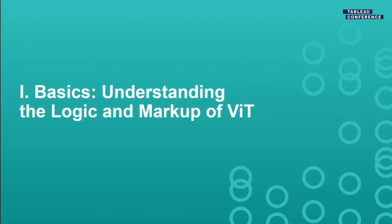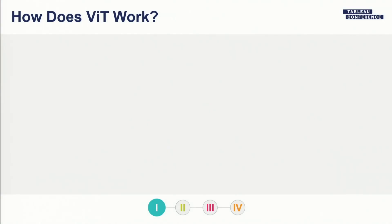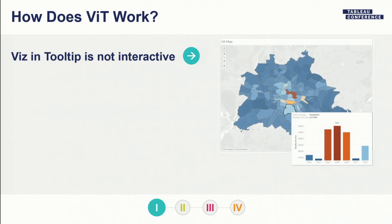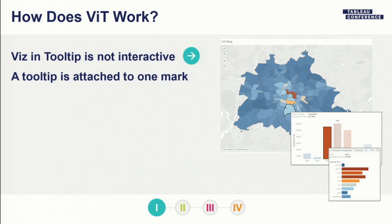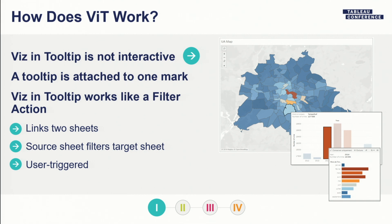So let's start with the basics: what is a viz in tooltip and how does it work? Viz in tooltip is not interactive — you won't have a viz in tooltip inside another viz in tooltip, because viz in tooltip is just a PNG. Next, viz in tooltip is associated with one mark. And it basically works like a filter action, creating a link between a source sheet and a target sheet, where the source sheet filters the target sheet, triggered by user action.